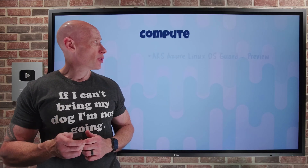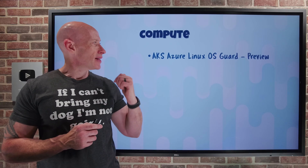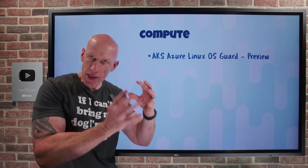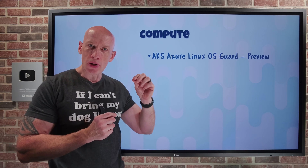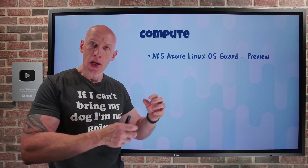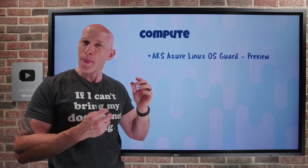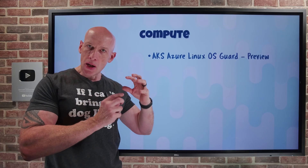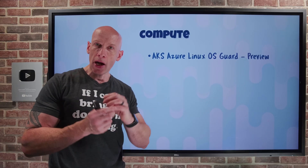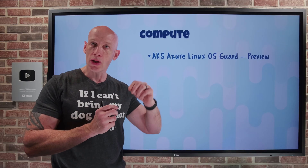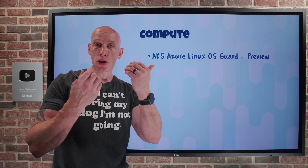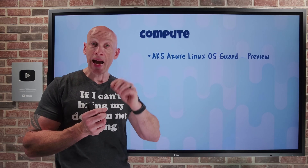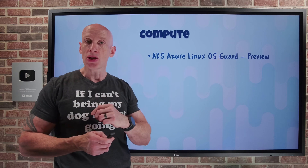On the compute side, we now have AKS Azure Linux OS Guard in preview. OS Guard adds additional protection for the container hosts running Azure Linux 3.0, which is already FedRAMP certified. It ensures only trusted binaries from signed sources can run, locks down the user space from tampering, and coupled with trusted launch, it attests to the entire boot integrity.